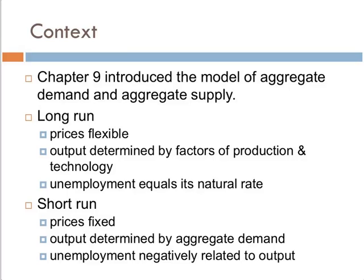Putting this into context: in Chapter 9 we developed a model of aggregate demand that was fairly simplified. What we were able to do in Chapter 9 is separate long-run effects from short-run effects. We saw that essentially when we have demand shocks in the long run, it affects the price level — because prices are flexible and output is determined solely by our technology and our factors of production.